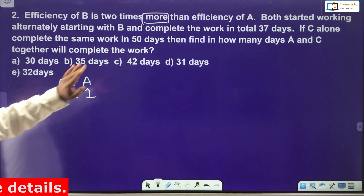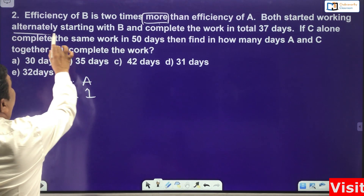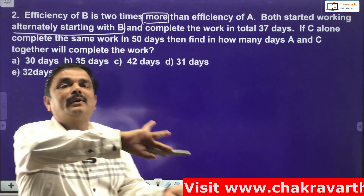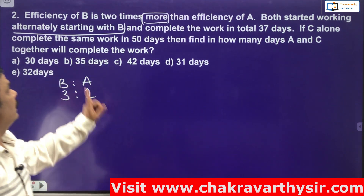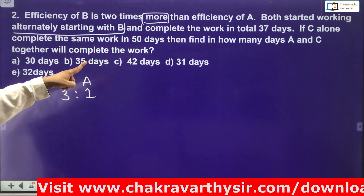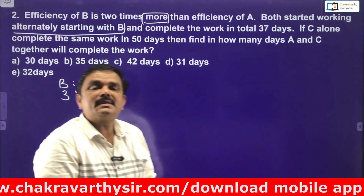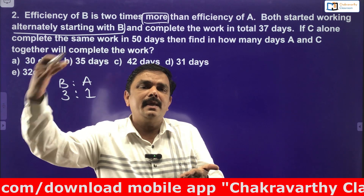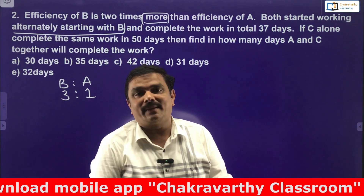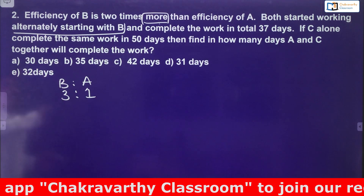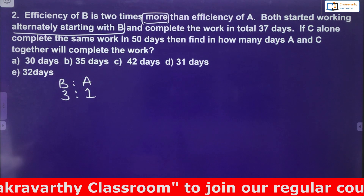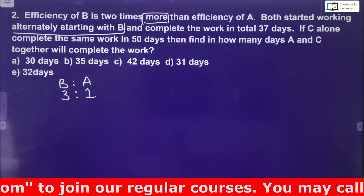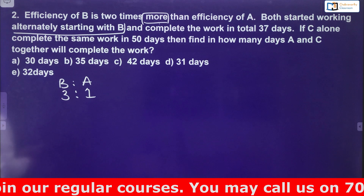Both started the work alternatively, starting with B — meaning first day B works, second day A works, then B, A, and so on. They complete the work in a total of 37 days. Additionally, if C alone can complete the same work in 50 days, we need to find how many days A and C together will complete the work.